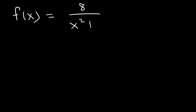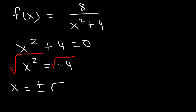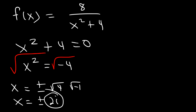Now let's look at another problem: 8 divided by x squared plus 4. We can't factor this expression using real numbers, and there's nothing to cancel. So we set the denominator equal to 0. Subtracting 4 from both sides gives x squared equals negative 4. Taking the square root of both sides, x equals plus or minus the square root of negative 4, which is the square root of 4 times the square root of negative 1 — that's plus or minus 2i. These are imaginary numbers, not real numbers, so there's no vertical asymptote. If you graph it, you won't see a vertical asymptote.